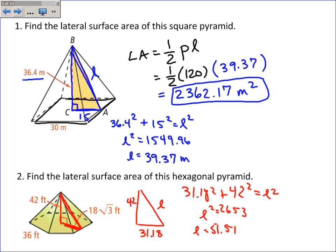So I will use that the lateral area is one-half PL. The perimeter of the base, it's a hexagon. Each side is 36. So 36 times 6 is 216. And L is 51.51. I multiply those together and I get 5562.79 feet squared.